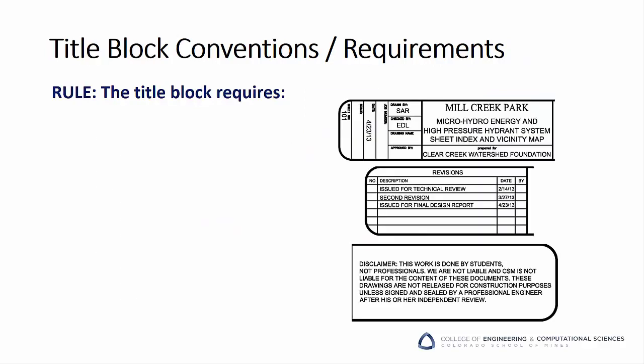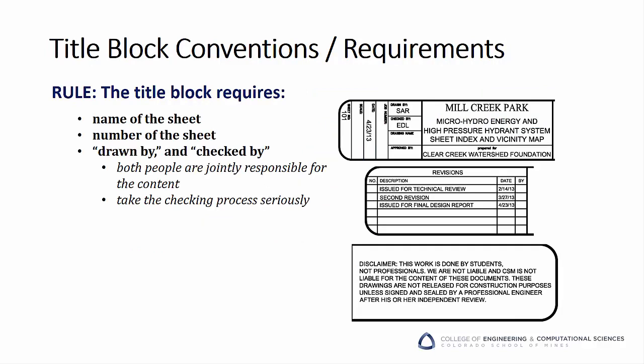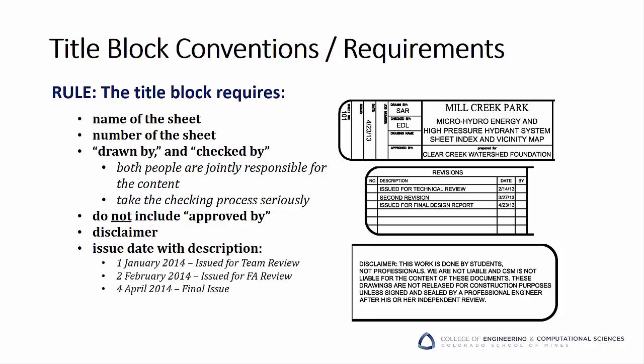A good title block requires several elements: the name of the sheet and the number of the sheet, and a drawn-by and checked-by box. Make sure both people are jointly responsible for the content, and take this process of having someone else peer review your work seriously. Do not include an approved-by in your title block because you are not professional engineers, and do include a disclaimer — this work is done by students, not professionals. We are not liable, and CSM is not liable for the content of these documents. These drawings are not released for construction purposes unless signed and sealed by a professional engineer after his or her independent review. Make sure you include a revision table in your title block, and include the client's name and contact information.